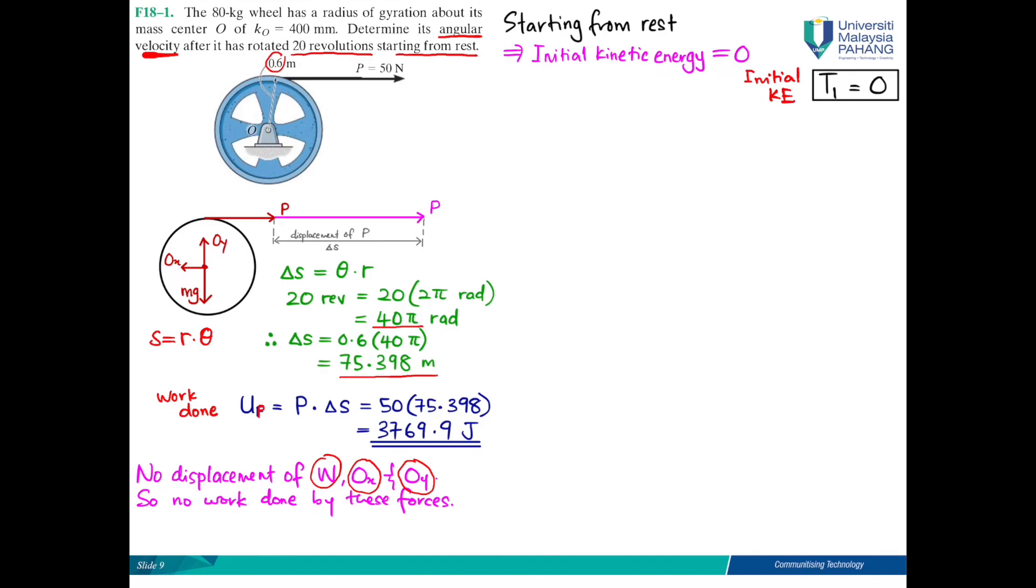That is what we call as the final kinetic energy, T2. This is a rotation case, so we will be using this formula: one-half I_O omega squared. We need to know the mass moment of inertia about point O, which is given as radius of gyration.